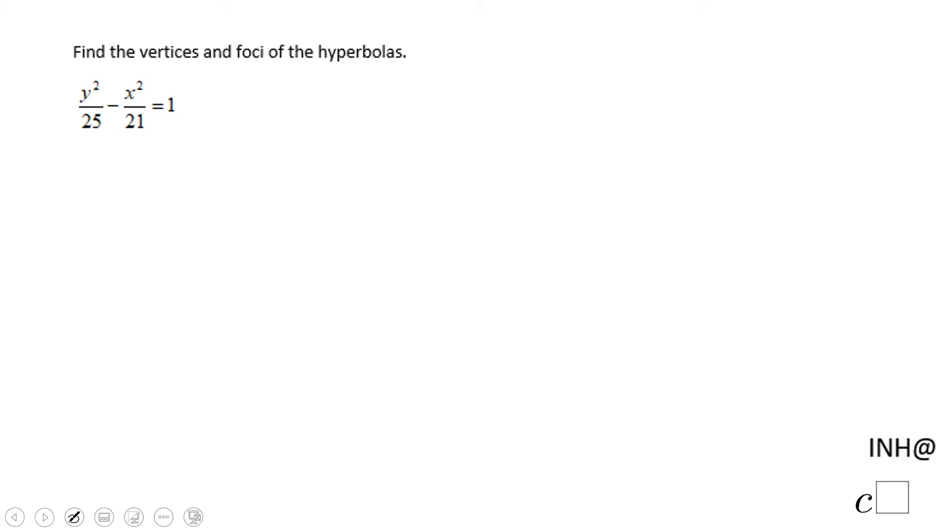Welcome or welcome back to I Need Help at C². In this example, we need to find the vertices and foci of a hyperbola. We notice the equation starts with y² minus x², which is very important because that tells you the y-axis is the focal axis. Whenever you see y² minus x², the y-axis is the focal axis.